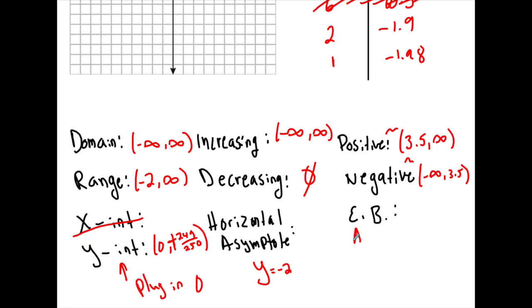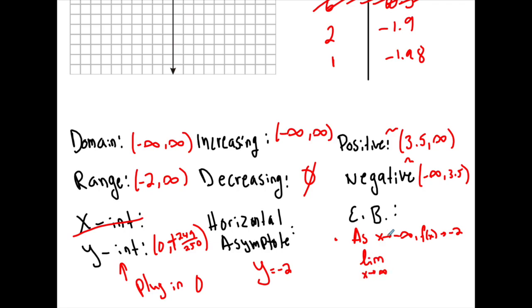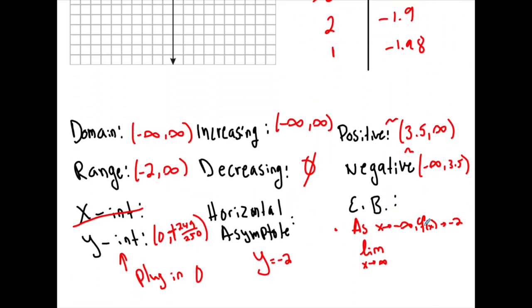Finally, end behavior. So, as x approaches negative infinity, g of x is going to negative 2, which we could also say as the limit as x goes to negative infinity of g of x equals negative 2. So, again, you only have to do it one of those two ways. As x approaches infinity, g of x goes to infinity. So, remember, it's always a number on one end and an infinity on the other. And here we say the limit as x goes to positive infinity of g of x equals infinity. So, if we were able to get the graph correctly, and I hope that this analysis is starting to make sense.